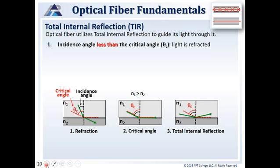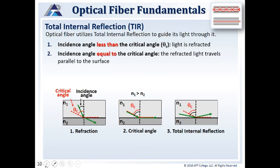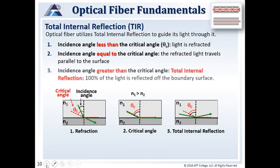If the incident angle is less than the critical angle, light is refracted — it goes into the other material and becomes refracted. If our incident angle is equal to the critical angle, the refracted light travels parallel to the surface with no reflection. If our incident angle is greater than the critical angle, we get reflection — this light is going to bounce off. Think of it like skipping a stone across water: if you get the angle right, the light bounces off. Then we have 100% of the light reflected off the boundary surface rather than going into it, as we see with refraction.